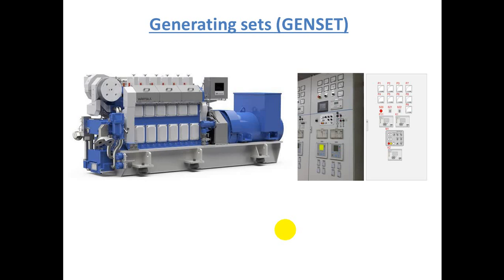What is it called and what is it used for? It's called the generating set, or GIN seat in abbreviations. The basic function of the GIN seat is to produce electricity by having the engine in operation and thus driving the generators.